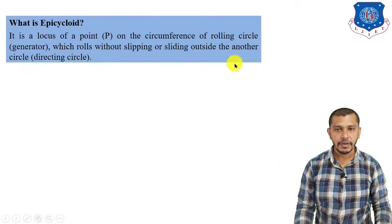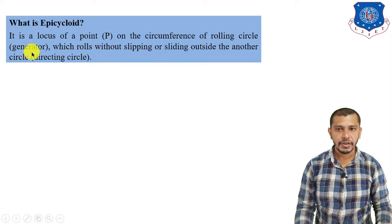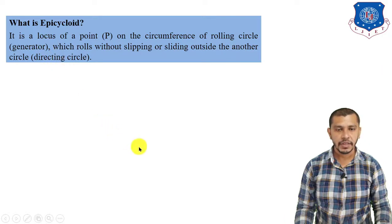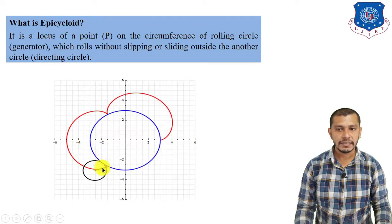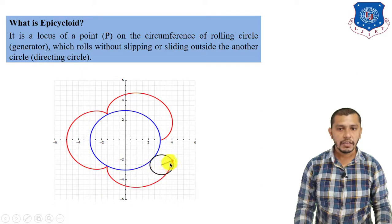What is epicycloid? It is a locus of a point on the circumference of the rolling circle which rolls without slipping or sliding outside another circle. The rolling circle is known as the generator, and the circle on which it rolls is known as the directing circle. In this animation you can see that if the circle rolls on another circle without slipping or sliding, the curve traced out by the point on the circumference of the rolling circle is the epicycloid.